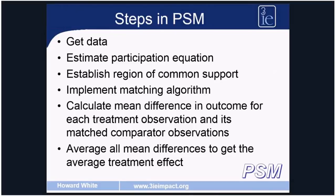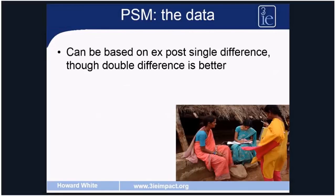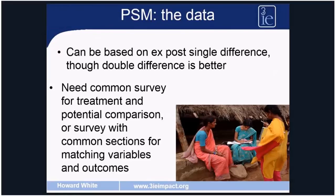How do we implement propensity score matching? First we get the data required — ex-post single difference, but double difference is better. Most importantly, we need a common survey for treatment and potential comparison groups, or a survey with similar or identical modules for both the matching variables and the outcomes. We need data on the outcome in treatment and comparison areas, and data on the variables we're going to use for matching, which need to be asked in similar forms. If one survey has years of education and another uses completed education level, we have to adjust those variables to make them comparable. If they're too dissimilar in how the data were collected, we can't use that characteristic for matching.